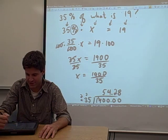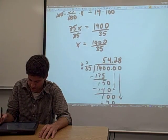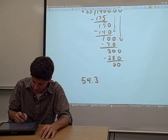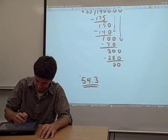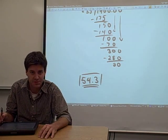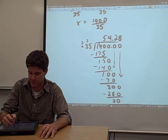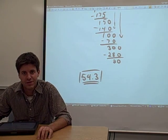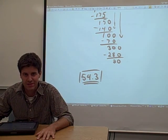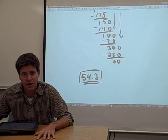And then I want to go back and figure out what the heck are we doing here. 35% of what is 19? So what we found was that 35% of 54.3 is 19. And that's of course an approximation because we ended up rounding this thing off.